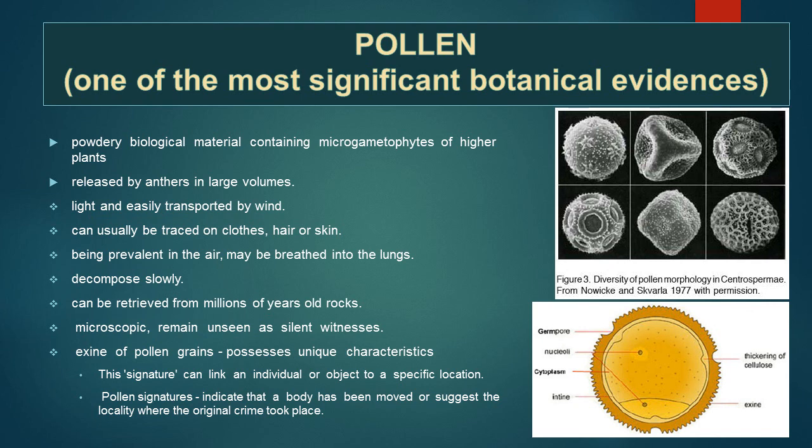Pollen is a powdery biological material containing microgametophytes of higher plants, released by anthers in large volumes. Pollen grains are considered one of the most important botanical evidences because they are light and easily transported by wind. They can usually be traced on clothes, hair or skin. They are prevalent in the air and may be breathed into the lungs. They decompose slowly and can even be retrieved from millions-of-years-old rock. Being microscopic, they remain unseen as silent witnesses, and unlike fingerprints, it is nearly impossible to do away with them from a crime scene.